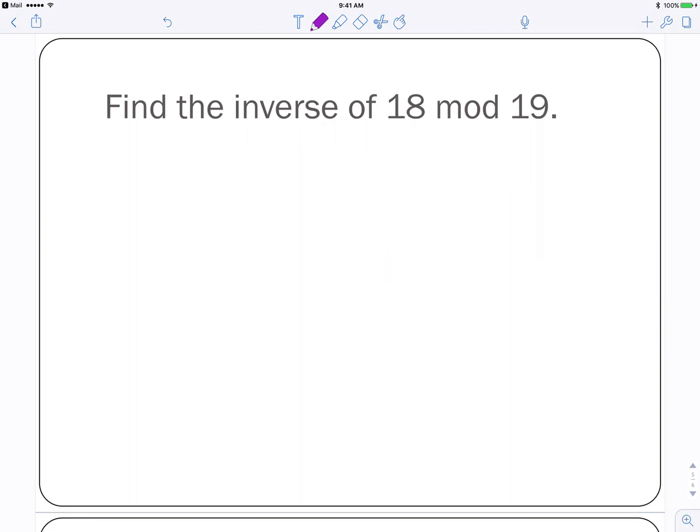Now we want to find the inverse of 18 mod 19. So we could do 1 is congruent to 20 and that's not a multiple of 18. Adding 19, we get 39, and then we get 58, and then we get 77. Still no multiples of 18. Eventually, if you keep adding on, you're going to get up to 324, which is 18 times 18. So 18's inverse is 18.